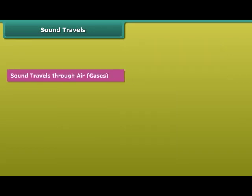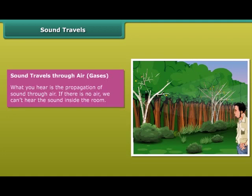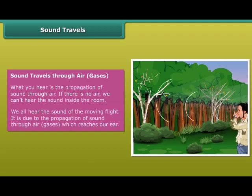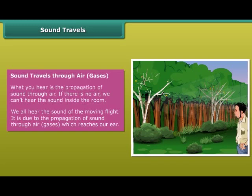Sound travels through air and gases. What you hear is the propagation of sound through air. If there is no air, we can't hear the sound inside the room. We all hear the sound of a moving flight. It is due to the propagation of sound through air and gases, which reaches our ear.